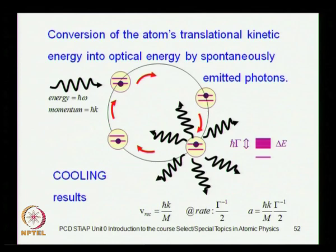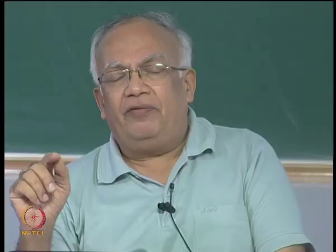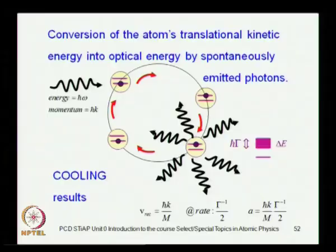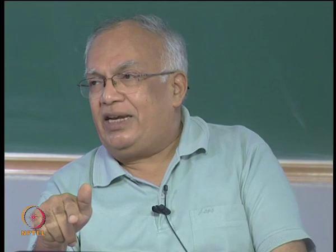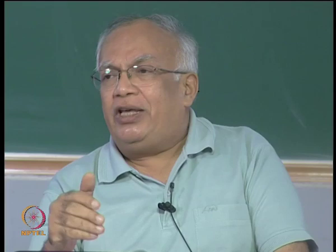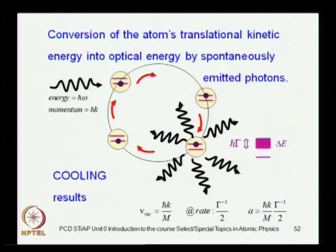Once we have the tools for the Zeeman effect and have studied the hyperfine structure — how it affects energy level spectra — we will see how these can be exploited to cool atoms by exposing them to radiation pressure. The atom absorbs electromagnetic energy, gets excited, then decays to the ground state emitting the absorbed energy in random directions. When this cycle is repeated, the atom actually cools down — this is the essence of laser cooling.